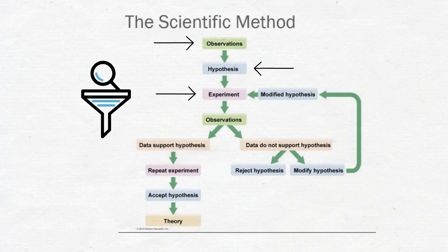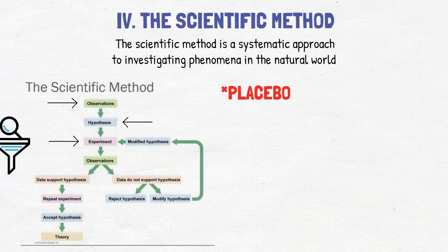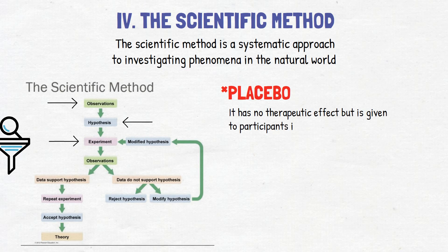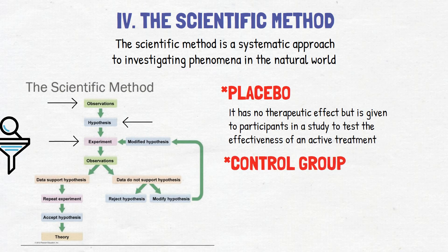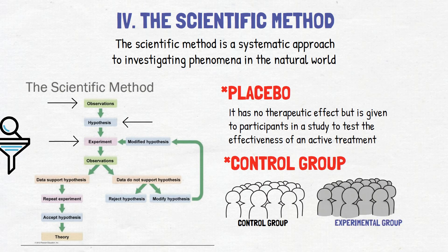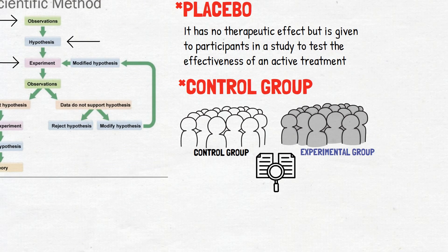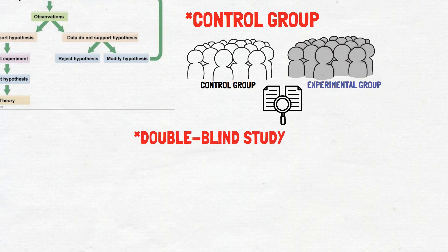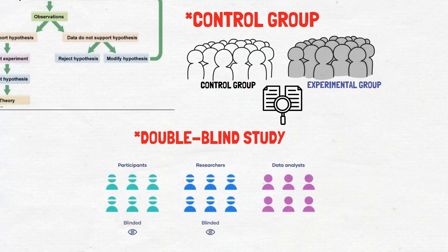There are important items to consider when it comes to scientific research. A placebo, or sugar pill as it's sometimes called, is a substance or treatment that has no therapeutic effect, but is given to participants in a study to test the effectiveness of an active treatment. A control group is a group of participants who do not receive the treatment being tested, providing a baseline for comparison. The experimental group does receive the treatment. A double-blind study is one where neither the participants nor the researchers know which group the participants belong to, and participants are randomly assigned to either the control or experimental group.